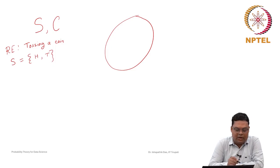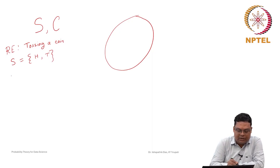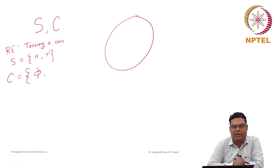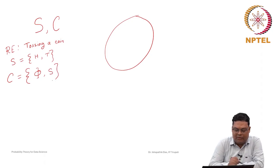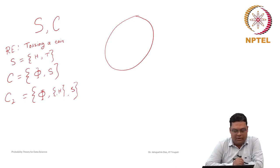For defining a sigma field, it is not required to have a random experiment; we are just giving an example. Any non-empty set will do — S can be R. Here we consider S = {head, tail}. C is a collection of subsets of S. Suppose C contains only two subsets: the null set and S itself. We can also consider another collection C2, which contains phi, then {H}, then S.